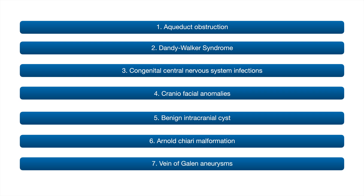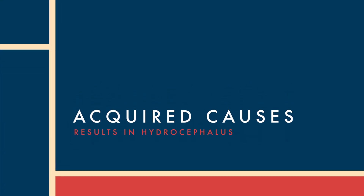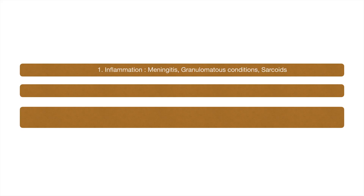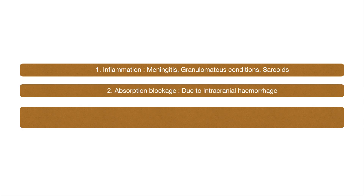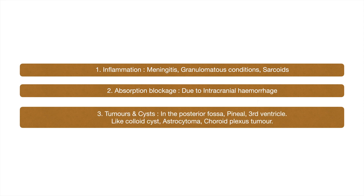Acquired causes include: inflammation, meningitis, granulomatous conditions, and sarcoids. Absorption blockage causes include intracranial hemorrhage, tumors and cysts in the posterior fossa, pineal region, and third ventricle — such as colloid cyst and astrocytoma — as well as choroid plexus tumor.